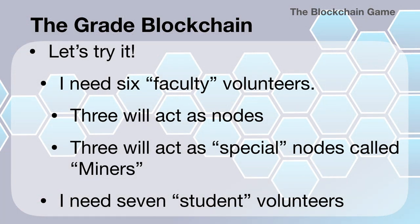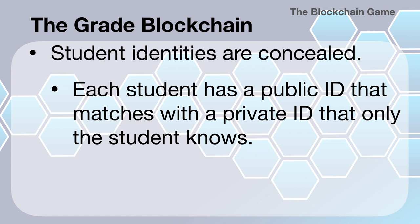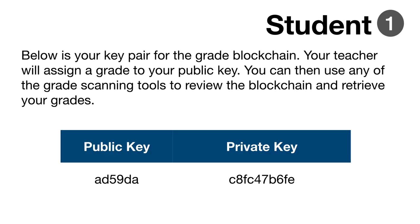I've asked for seven student volunteers, and I give each student volunteer a sheet that has a public and private key on it. I tell them they must keep this secret — it's very important that this not become public knowledge and they shouldn't have it out where others can see it. They should fold it up and put it in their wallet right now. I then mention to the entire group that student identities are being concealed: each student has a public ID that matches a private ID that only that student knows.